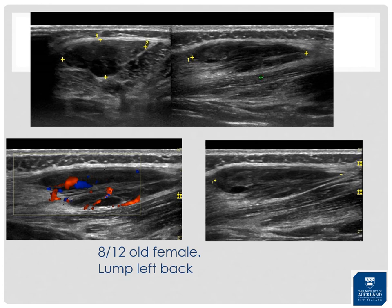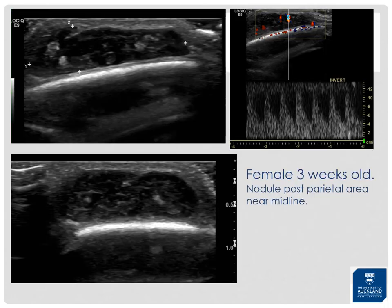An intramuscular mass — not in the dermis, not in the subcutaneous tissue, but below the fascia — that is well-defined but with poorly-defined posterior margins and quite vascular, could range from a sarcoma to a benign vascular malformation. Such cases definitely need MRI. A separate case: a 3-week-old female with a well-defined compressible 20mm heterogeneous hypoechoic mass in the post-parietal area, moderately vascular with arterial feeders and venous flow.